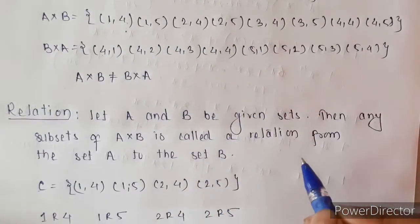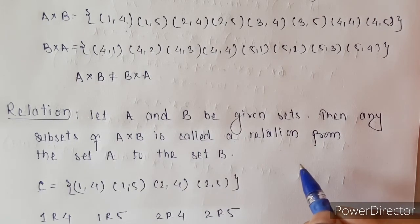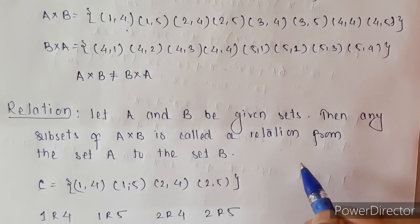Next is relation. If we have two sets A and B, then any subset of A cross B is called a relation from set A to set B.